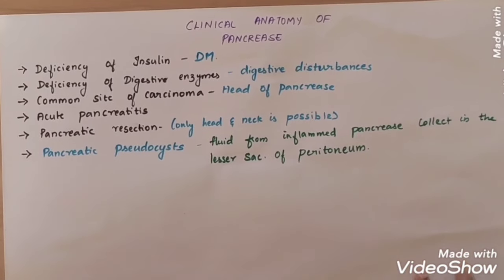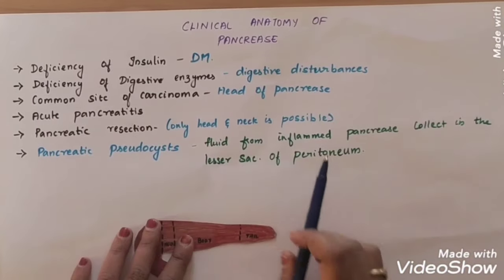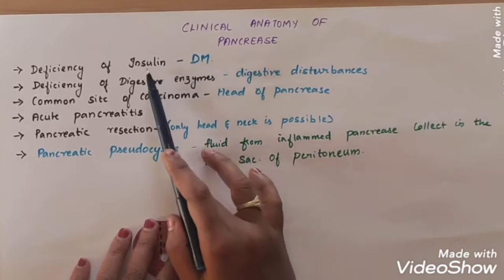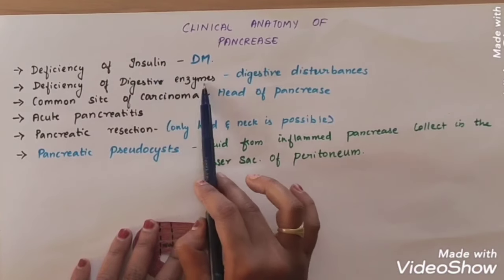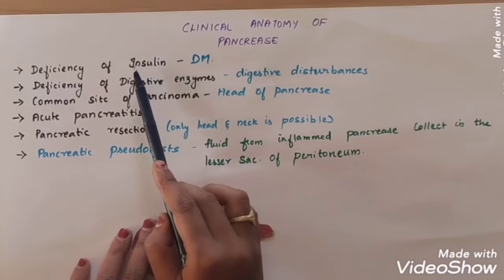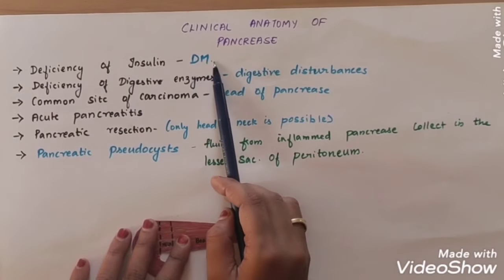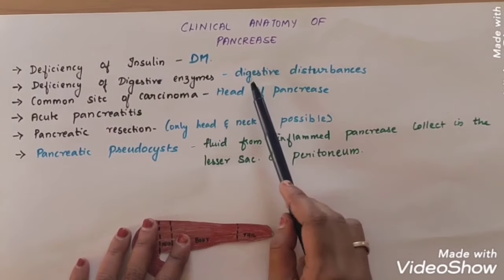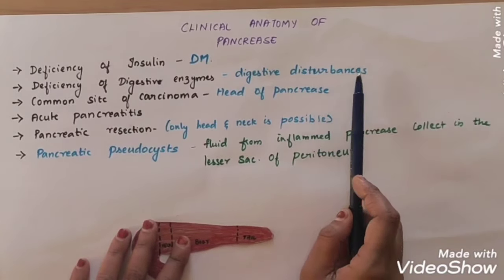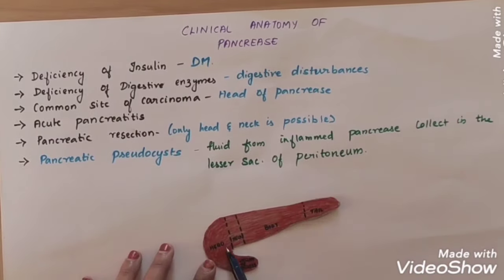Coming to the final topic of the pancreas — that is clinical anatomy of the pancreas. The pancreas produces insulin and digestive enzymes; it produces both hormones and digestive enzymes. So if hormones are deficient — for example, insulin deficiency — it causes diabetes mellitus. If digestive enzymes are deficient, it causes digestive disturbances like indigestion. The pancreas is also a common site for cancer.